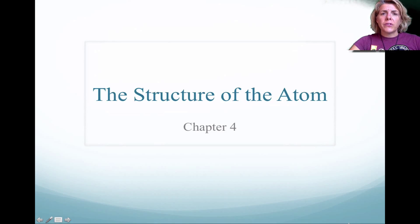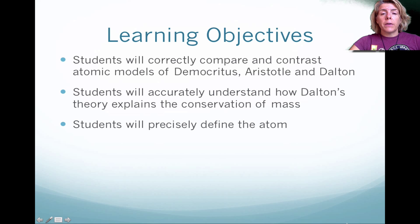Hi, this is Mrs. Robel. This is Chapter 4, Structure of the Atom, Part 1. In this video, we're going to learn about how Democritus, Aristotle, and Dalton created atomic models and see which one is the more correct version. Also, we're going to look at how Dalton's theory of the atom explains conservation of mass, and then lastly, we're going to precisely define the atom.